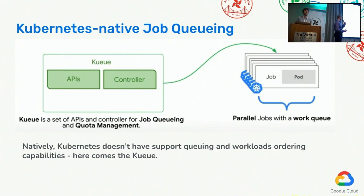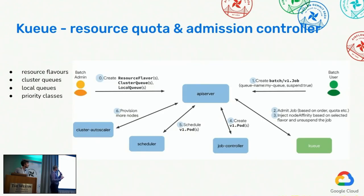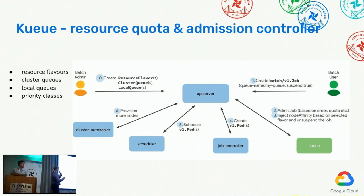Kueue basically serves as a queuing mechanism with quota management. Before we get into the details of Kueue and how it can work in an existing GKE cluster, we need to mention that there is a person — the owner of the Kubernetes cluster — who defines the resources at the disposal of the cluster. This person is called either the Kubernetes administrator or batch administrator.